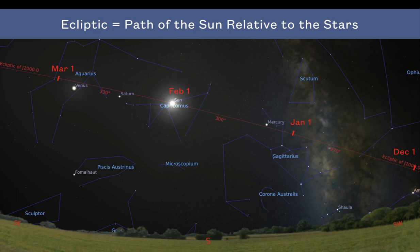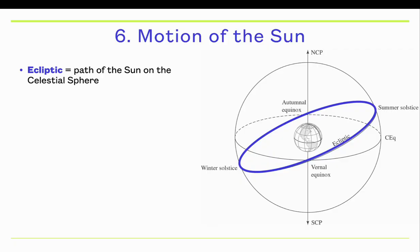This motion is due to the Earth orbiting the Sun. We have a different perspective in space as the Earth orbits around, so it appears that the Sun is superimposed on different constellations in the night sky because we have a different angle on the Sun as we orbit around it. That red line — the path of the Sun on the celestial sphere — is called the ecliptic.